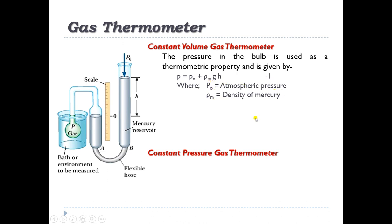When the bulb is brought into contact with the system whose temperature is to be measured, the bulb in due course comes to thermal equilibrium with the system. The gas in the bulb expands on being heated, pushing the mercury down in one limb. The flexible limb of the manometer is then adjusted so that the mercury again touches the tip in one of the limbs. The difference in mercury level H is recorded and pressure is estimated using P = P₀ + ρMgH.